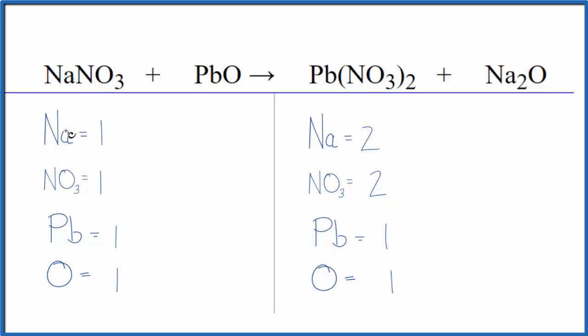We put a two here - one times two, that balances the sodium atoms. Then we have the nitrate here, so two times the one nitrate, that gives us two of those. We're done.